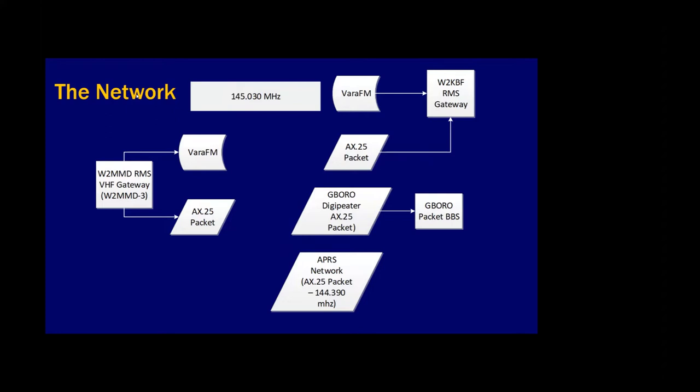Here's the W2MMD RMS gateway down at the clubhouse. All of this stuff is on .03 up here except for APRS. There's a VARA FM input and an AX.25 input both going into the same gateway, both on .03, through the same radio but using different protocols. Carl's system is also up 24/7 with VARA and AX.25. The Glassboro digi is up and there's a packet BBS there — those of you who were working packet back in the 80s can go back to that. The packet protocol is the same as used for APRS on 144.39.